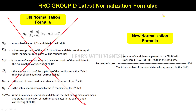Who will go to the normalization mark? If you have a difficulty level, you will change the marks. If you change the marks, you will see all of them. So, the formula is good. This is the formula: number of candidates appeared in the shift with raw score equal to or less than the candidate, divided by the total number of candidates who appeared in the shift, into 100. That is the percentile score.